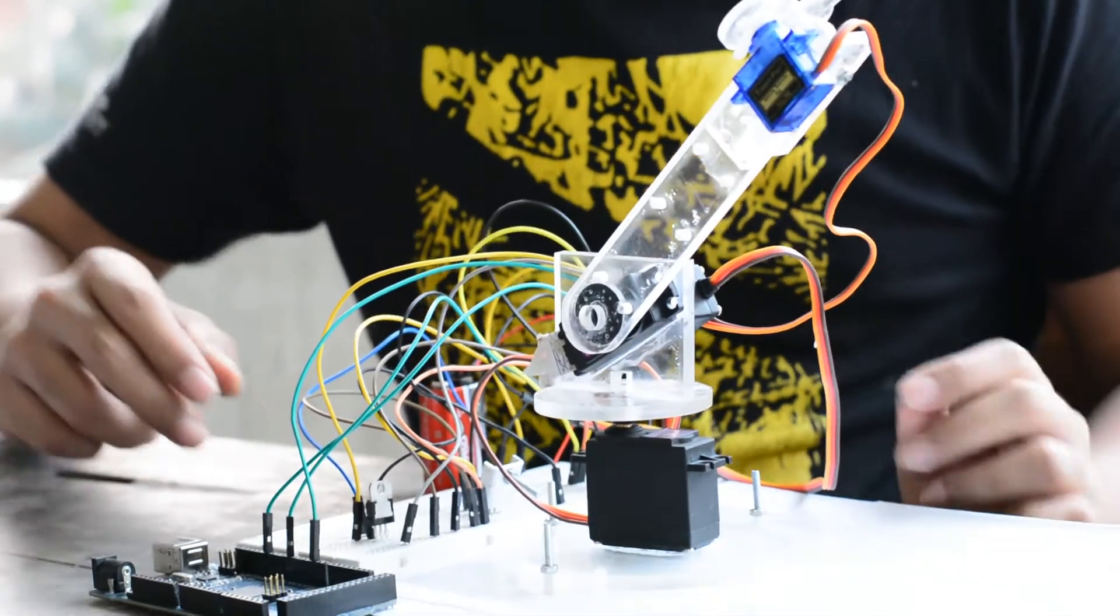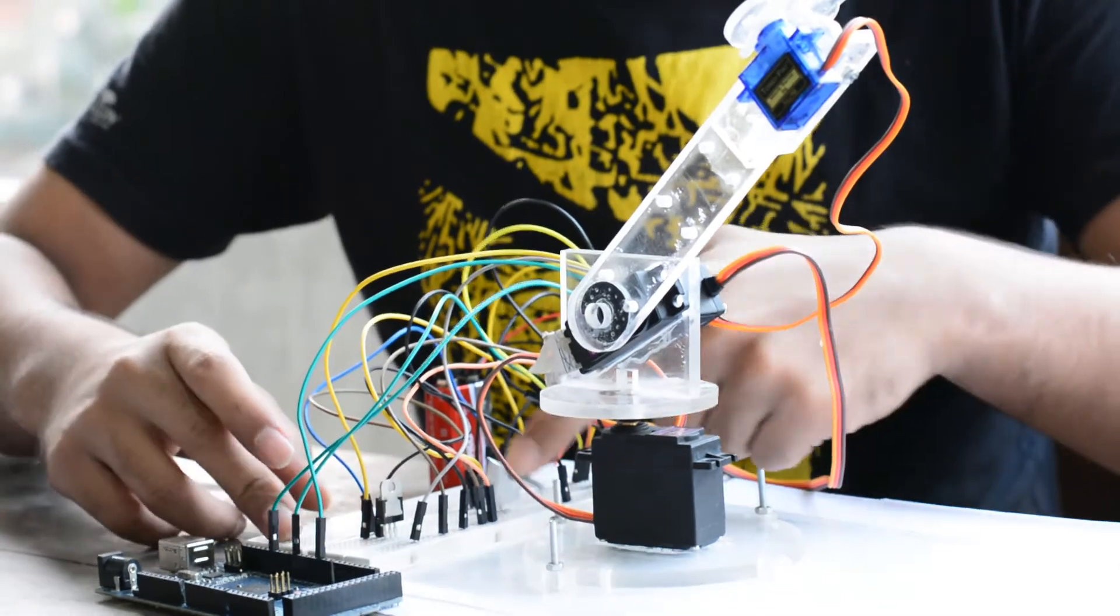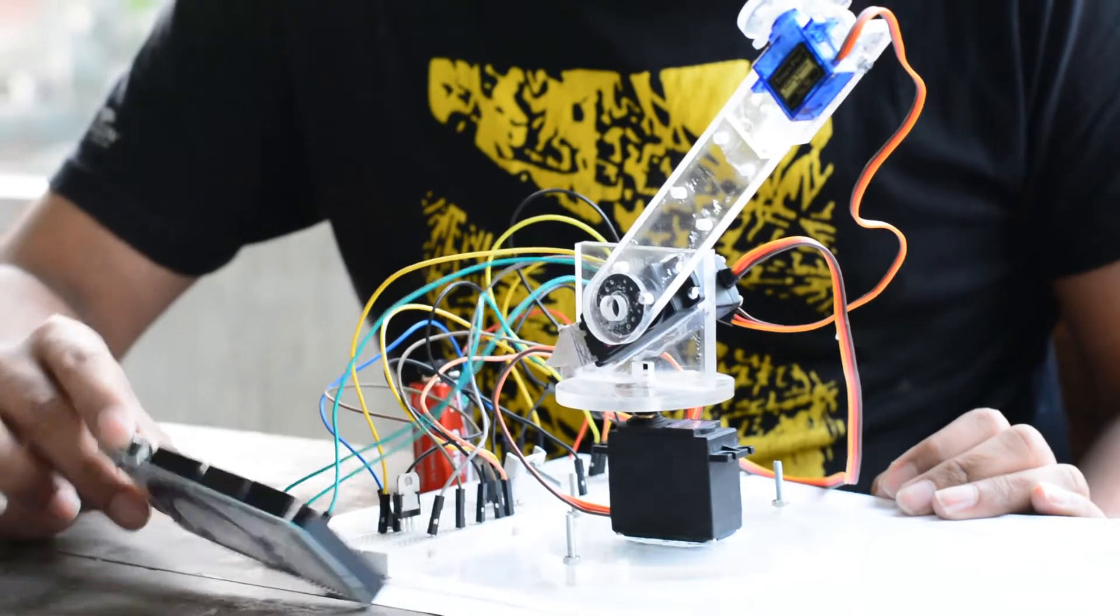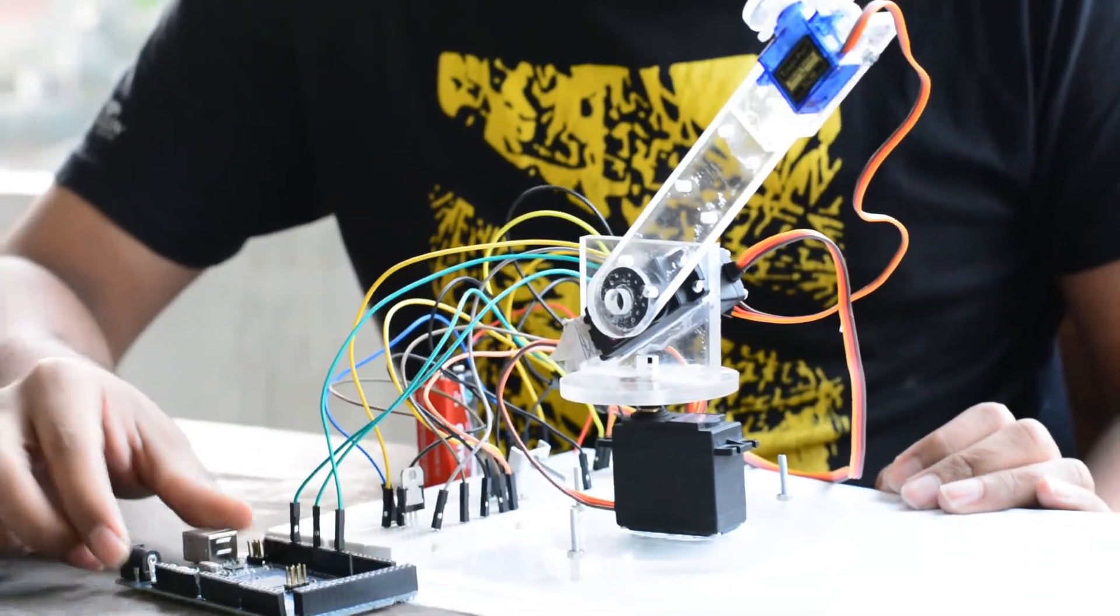Here is the 9g tower servo. Here are three voltage regulators for the voltage control of our servo. Here is a battery to power up our circuitry. Here is an Arduino megaboard to program our whole servo.